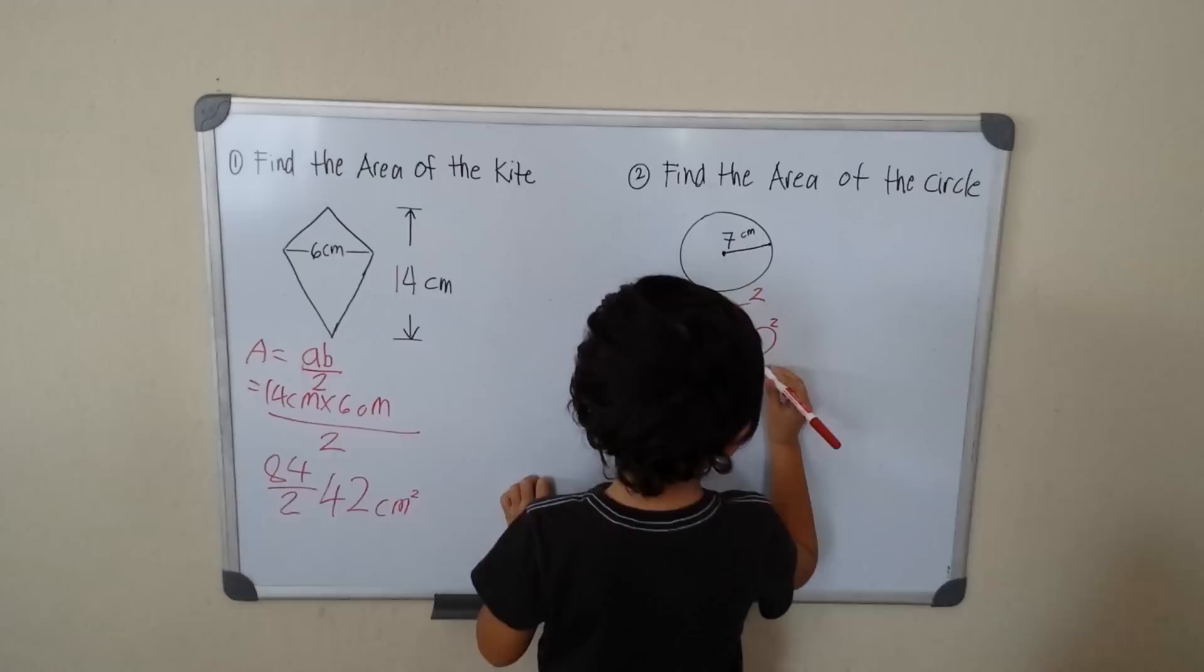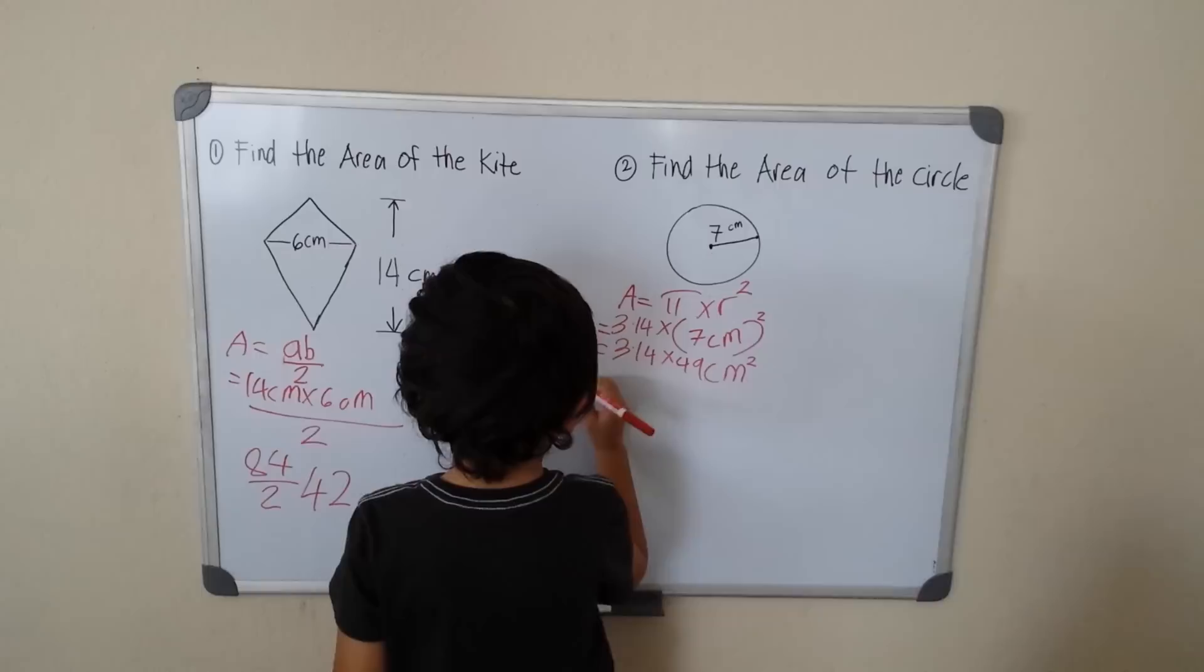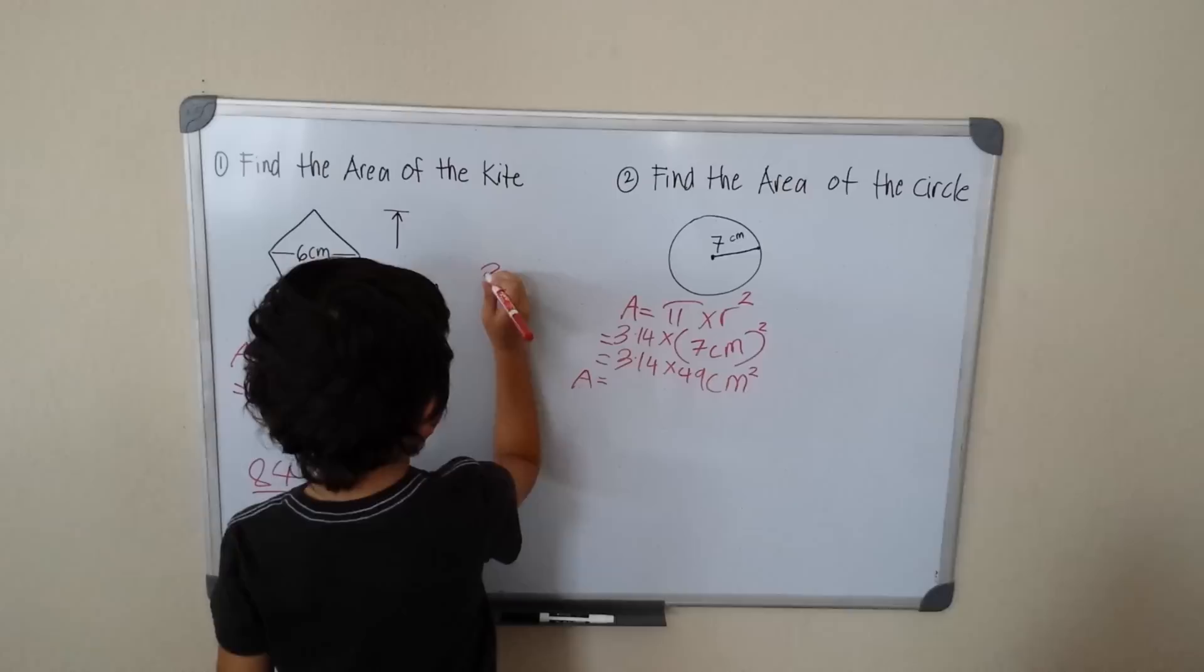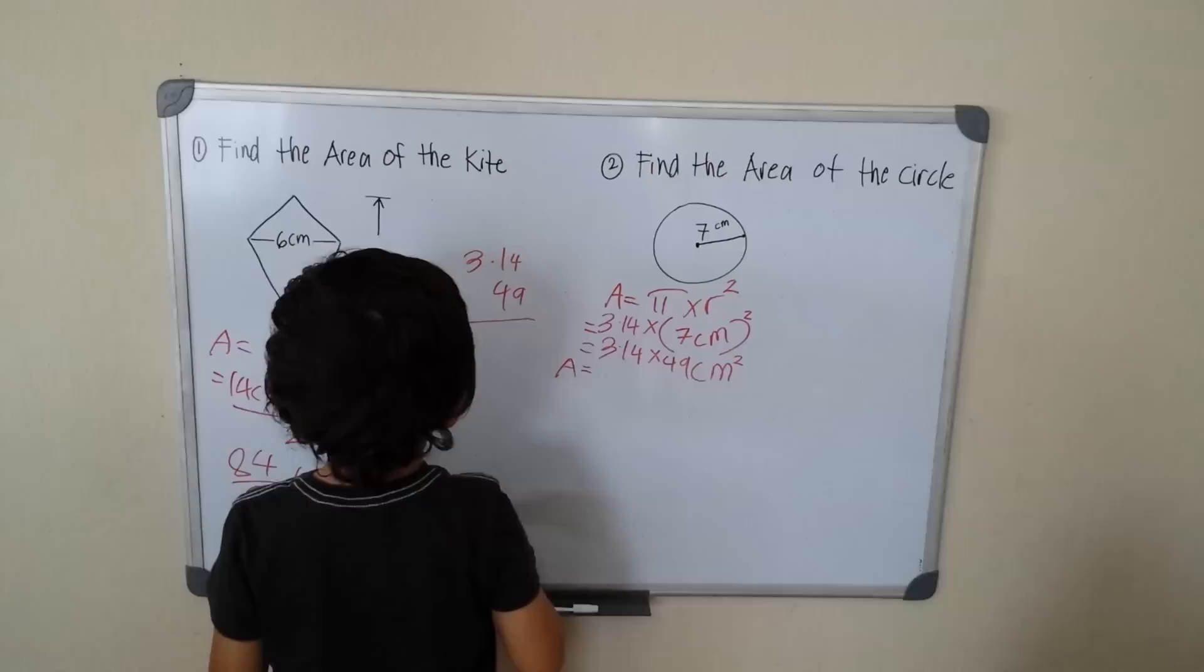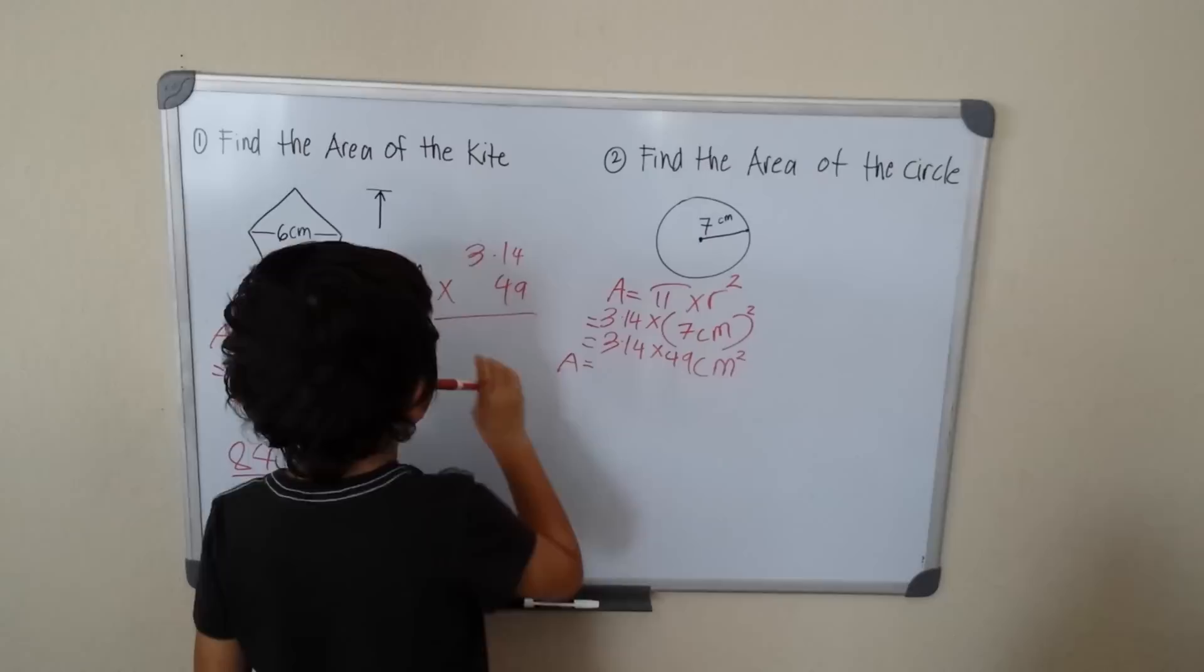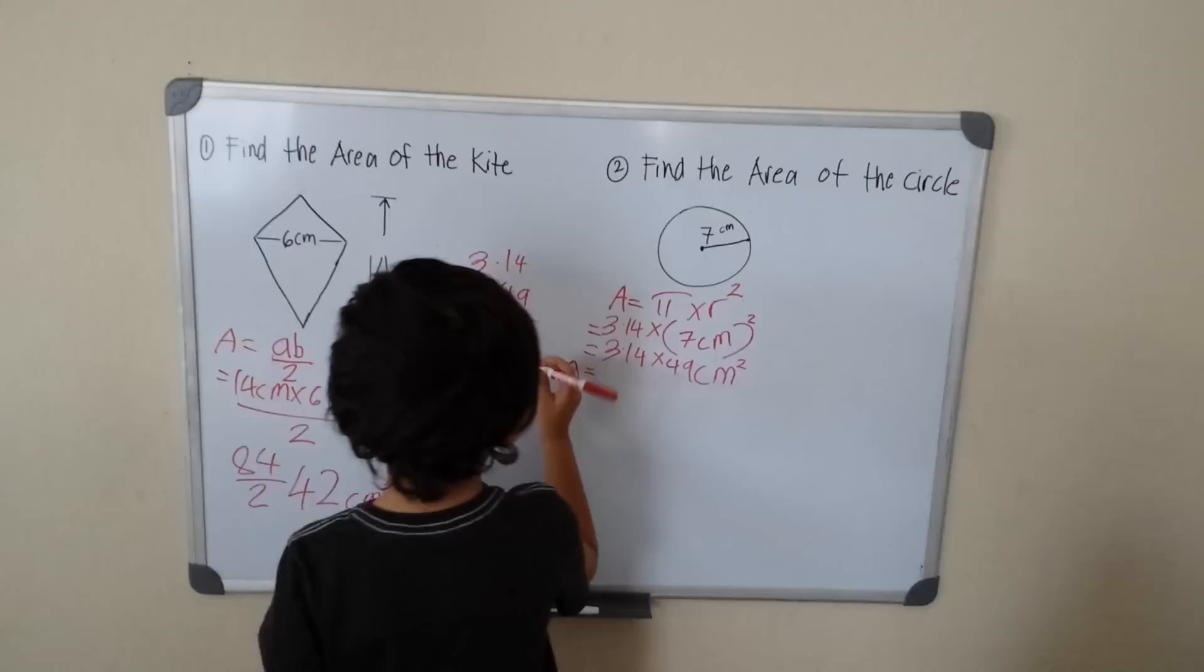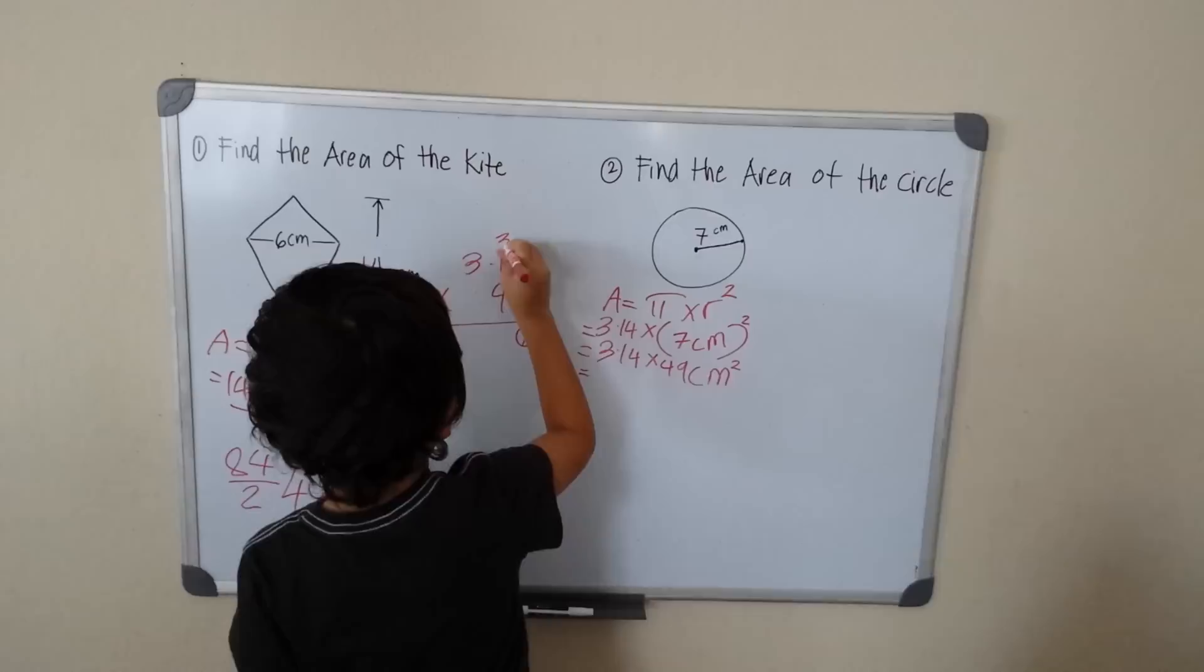Okay? Okay. So my area is equal to 3.14 times, what's that? 49. Equals 9 times 4 is, let's see, 9, 18, 27, 36. Okay, 36, carry the 3.